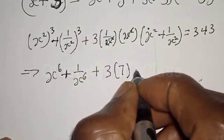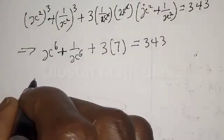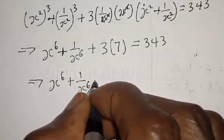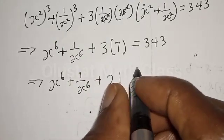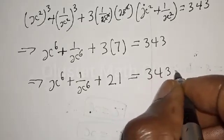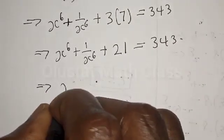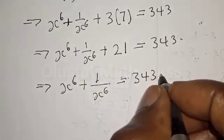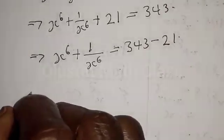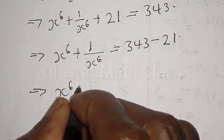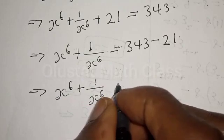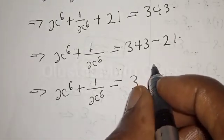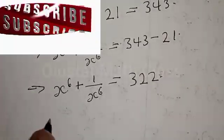The term 3 times (x squared times 1 over x squared) simplifies to 3, and x squared plus 1 over x squared equals 7 from equation star. So we have x raised to power 6 plus 1 over x raised to power 6 plus 3 times 7 equals 343, which gives x raised to power 6 plus 1 over x raised to power 6 plus 21 equals 343, therefore x raised to power 6 plus 1 over x raised to power 6 equals 343 minus 21 equals 322.